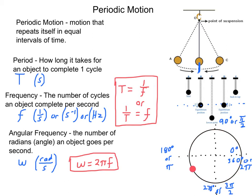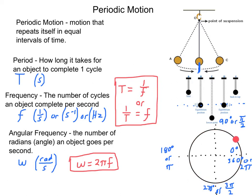So angular frequency is the number of radians an object goes per second. If you start the time right here when the object's right here, how much of an angle is it able to eat up within one second? Does it make it all the way around to the 270-degree mark — which in radians is 3 pi over 2? Or does it only make it to the 90-degree mark, eating up pi over 2 radians?